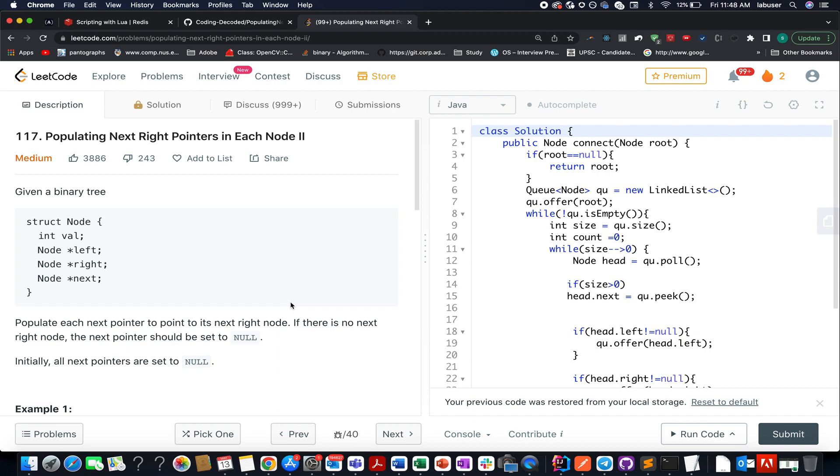The question we have today is populating next right pointers in each node second. In this question we're given a binary tree with three parameters, three pointers associated with it. The first one is the obvious one left, the other is the right one, and the third one is the next one.